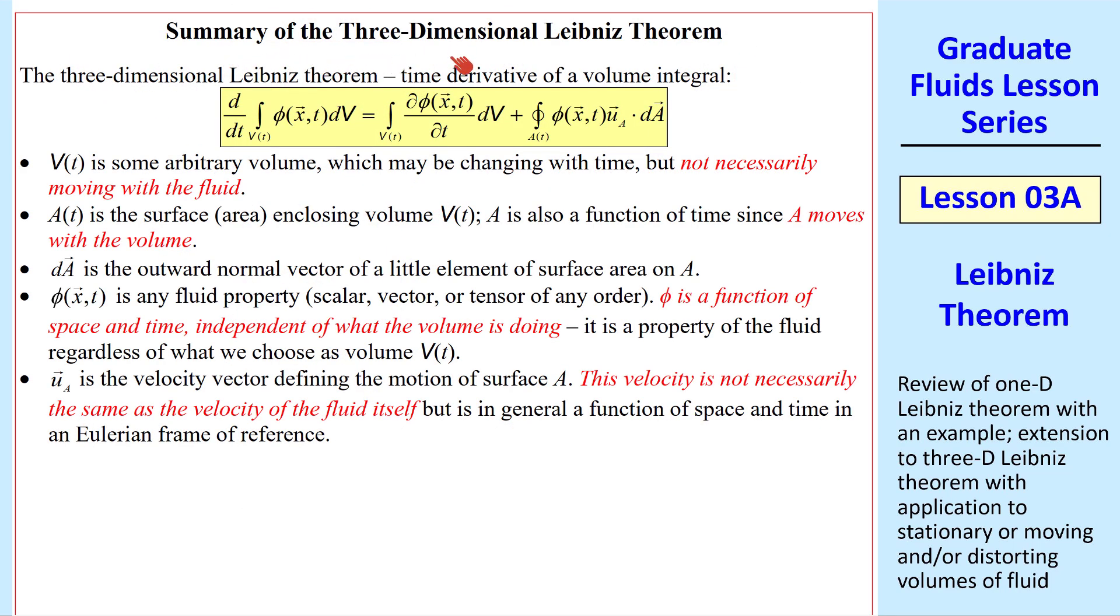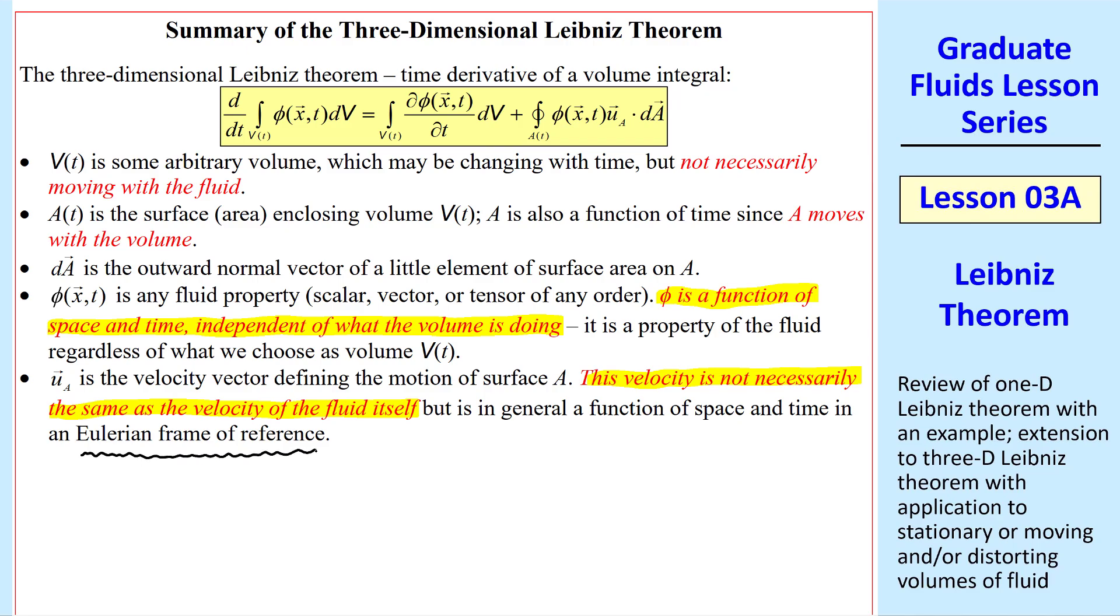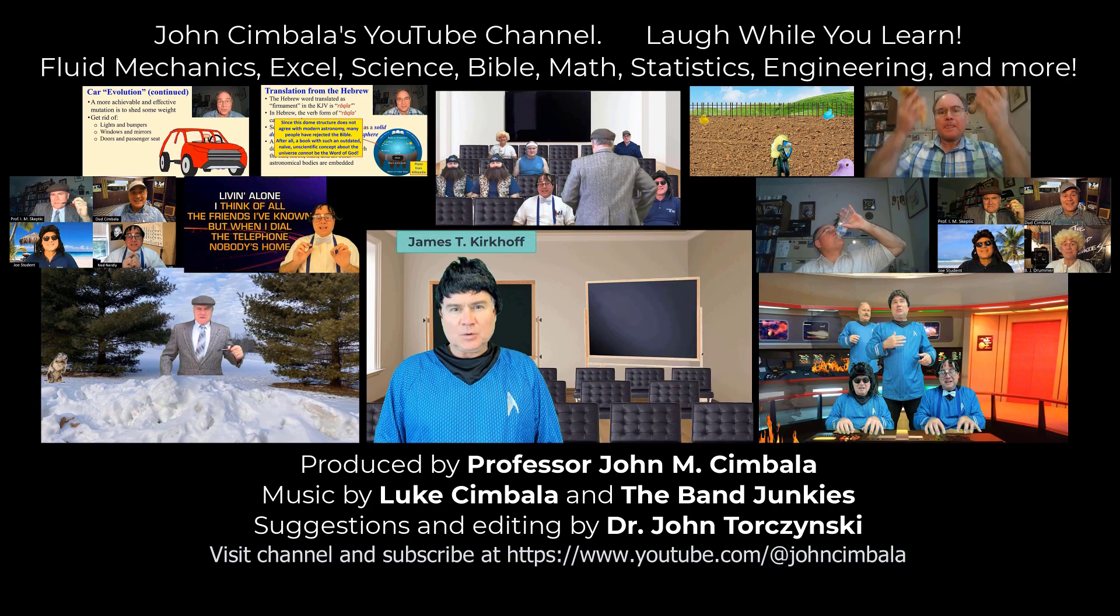I typed up a quick summary of the 3D Leibniz theorem. Here it is again. As I said, volume v(t) is an arbitrary volume, not necessarily moving with the fluid. A(t) is a surface area that encloses volume v. A moves with the volume, of course, since it's defining the volume. dA is the outward normal vector of a little element of area. Phi of x and t is any fluid property. And by the way, phi can be a scalar, vector, or even a tensor of any order. Phi is a function of space and time independent of what the volume is doing. It depends on the fluid or the fluid flow, regardless of what we choose as our volume. Vector uA is the velocity vector defining the motion of surface A. And again, this velocity is not necessarily the same as the velocity of the fluid itself. Finally, everything we're talking about is in an Eulerian frame of reference. Thank you for watching this video. Please subscribe to my YouTube channel for more videos.